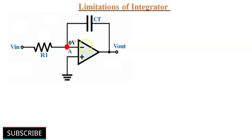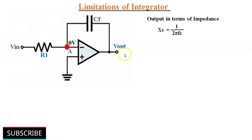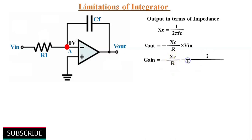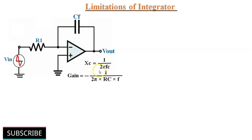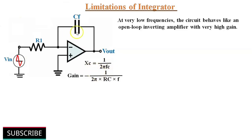In practical conditions, we might not get the output which was in the theoretical calculation. There are some limitations for the simple integrator circuit. The reactance of the capacitor Xc equals 1 by 2πFC, so for an inverting op-amp, Vout equals minus Xc divided by Rin multiplied by Vin. The gain equals minus Xc/R, which we can write as minus 1 divided by 2πRCf. At very low frequencies or at DC level, the reactance of the capacitor is very high and acts as an open circuit, so the gain of the op-amp will be very high, because the circuit acts as an open loop inverting amplifier. This will result in saturation of the output voltage.